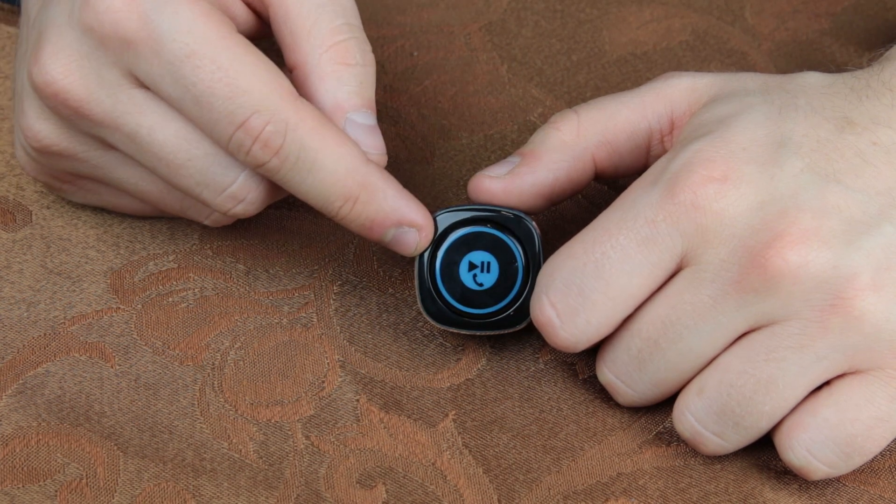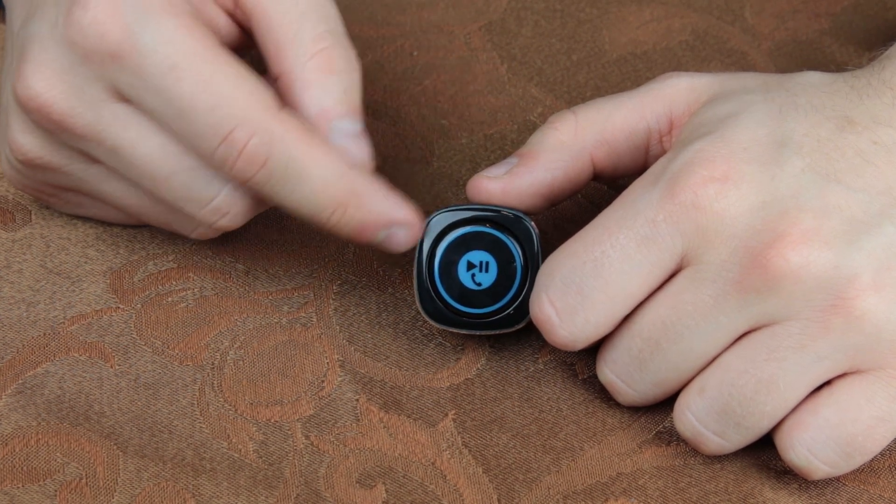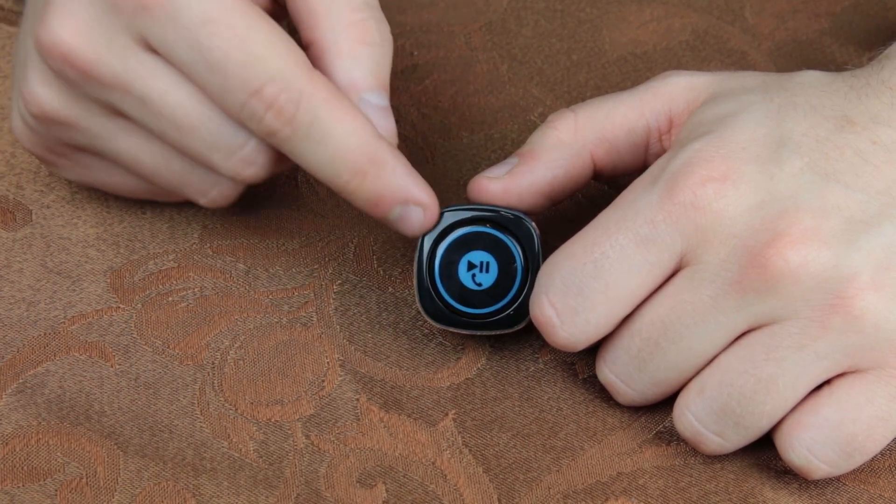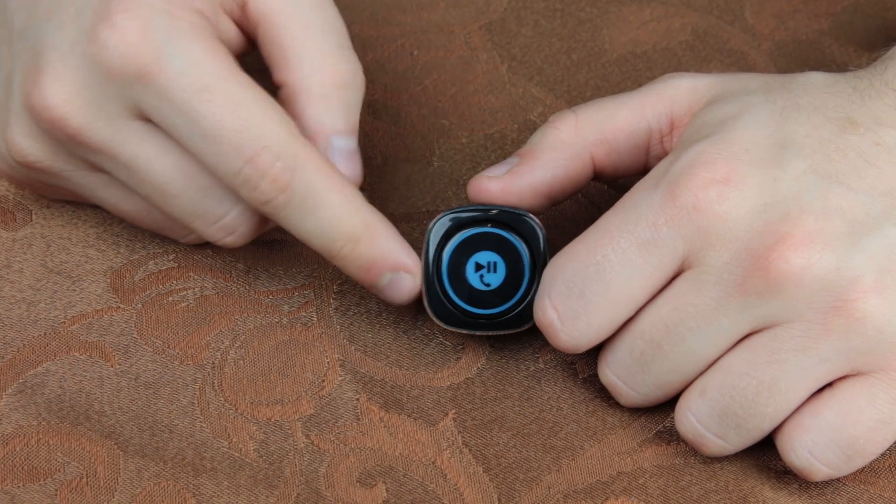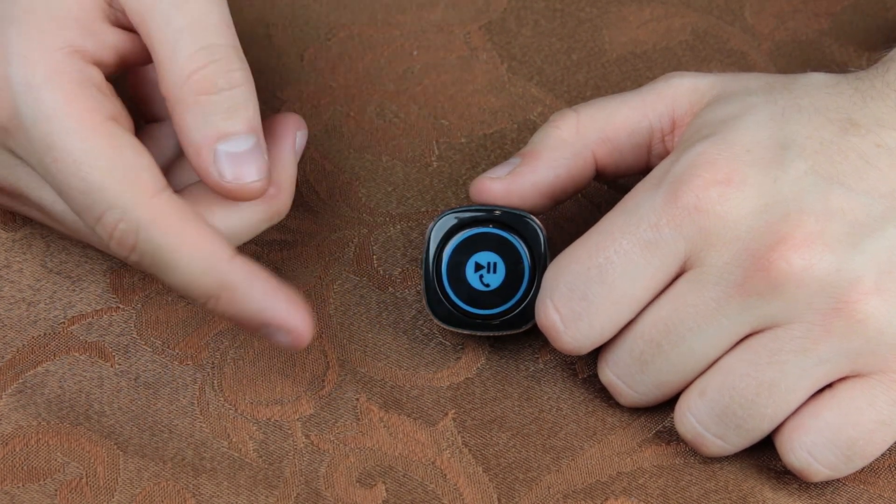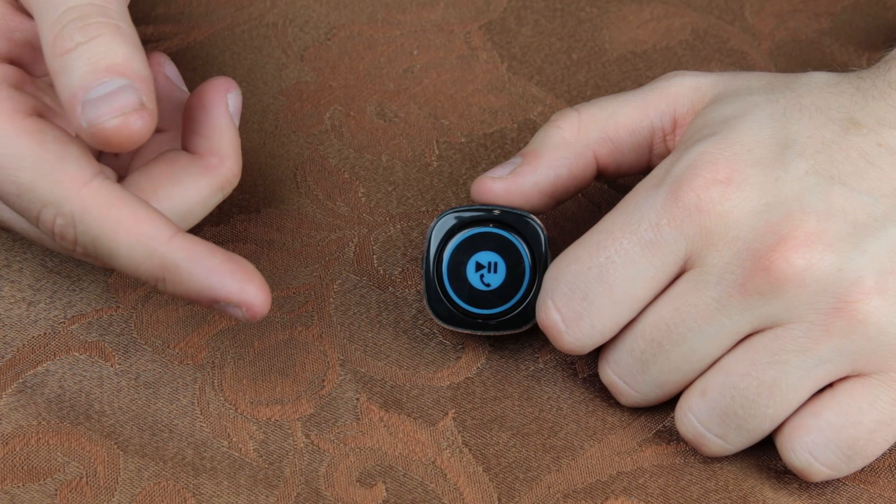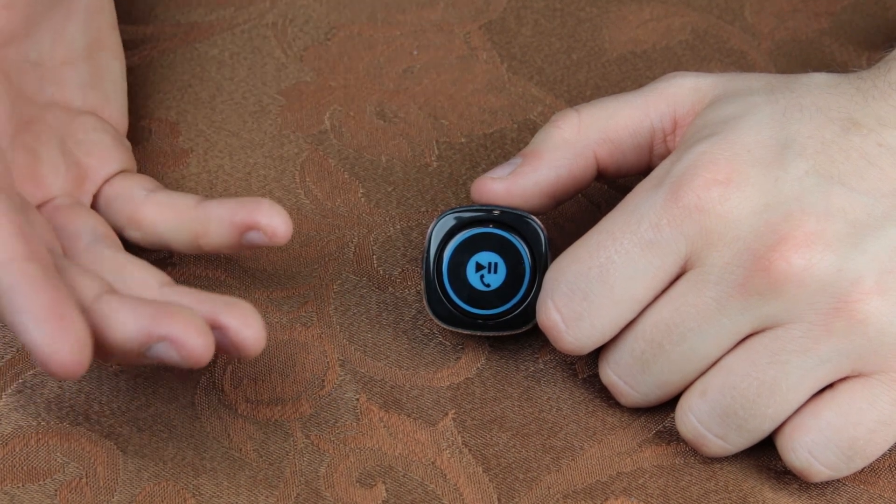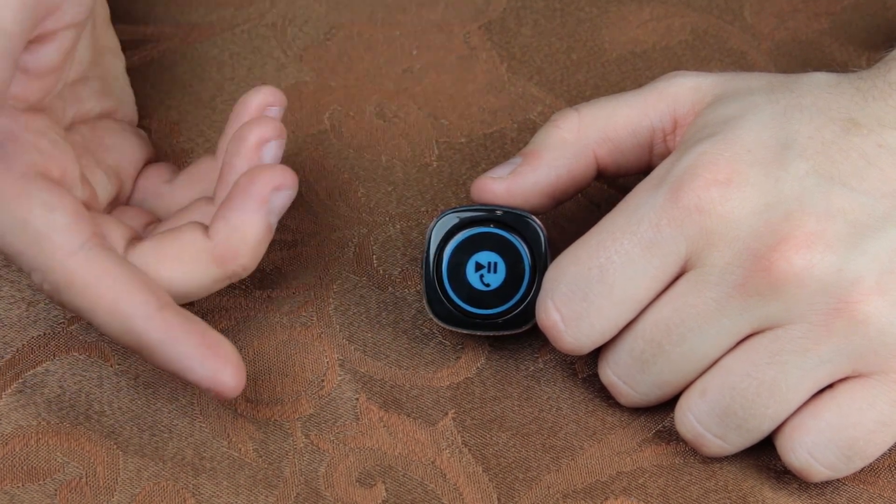So what that means is wherever your auxiliary cable is, wherever that plugs in, is where this is going to sit and that's wherever the microphone is going to be. It might be a better position than wherever your phone is mounted or maybe it's just sitting in a cup holder. So maybe this is an advantage, but maybe it's a disadvantage.